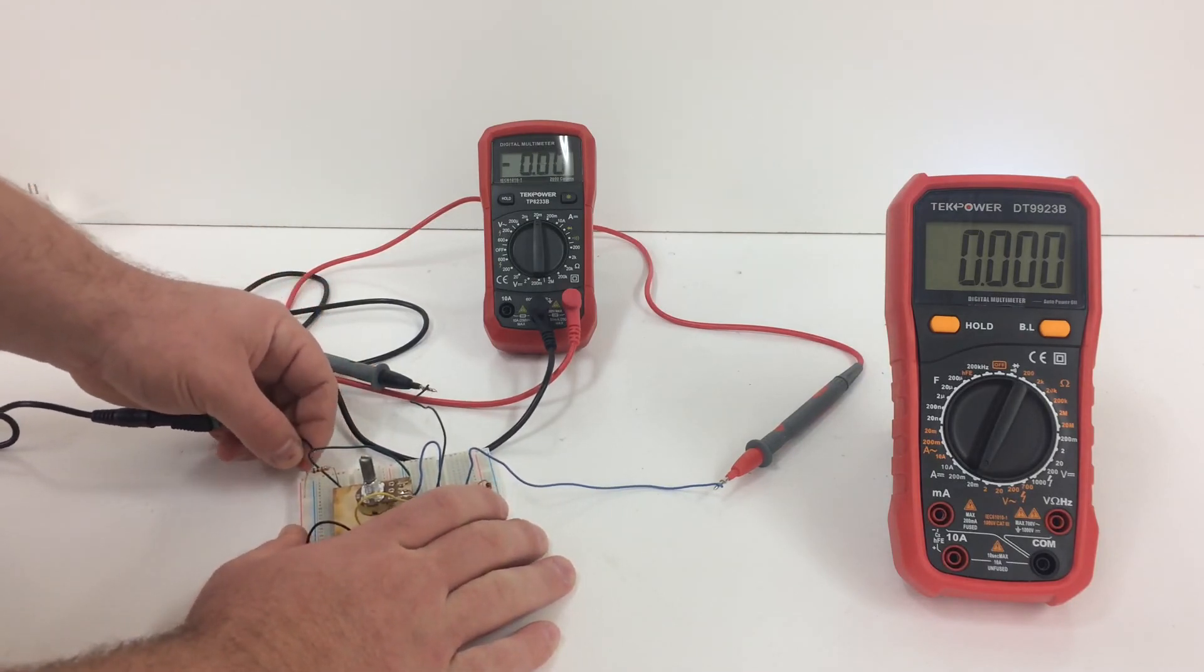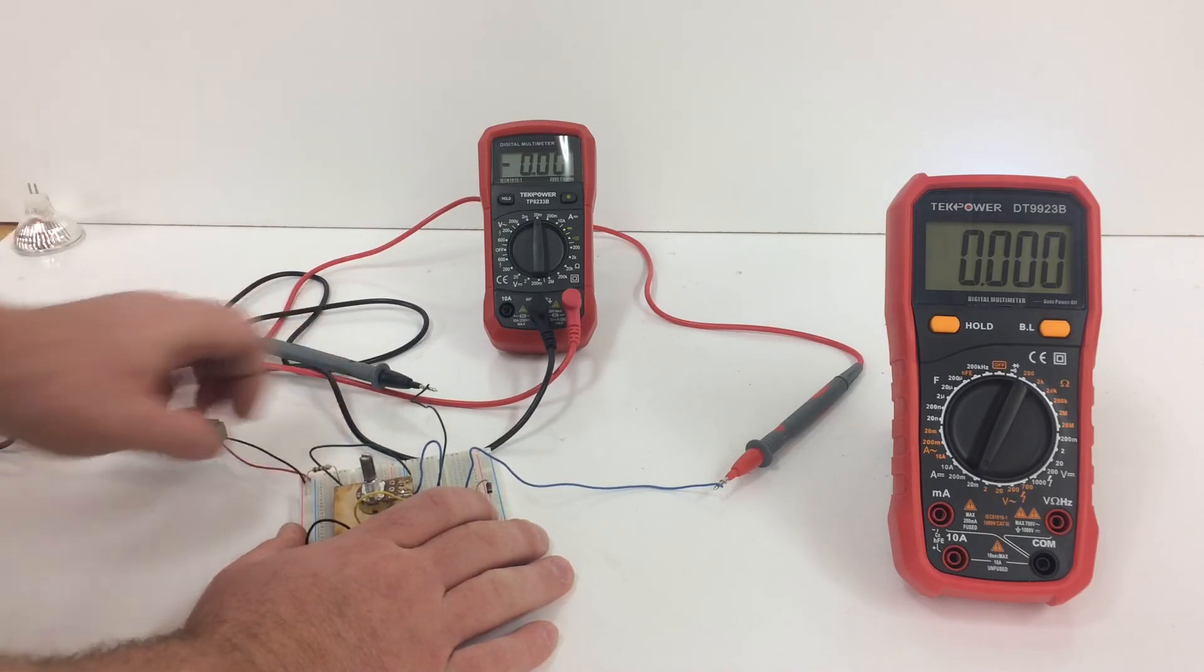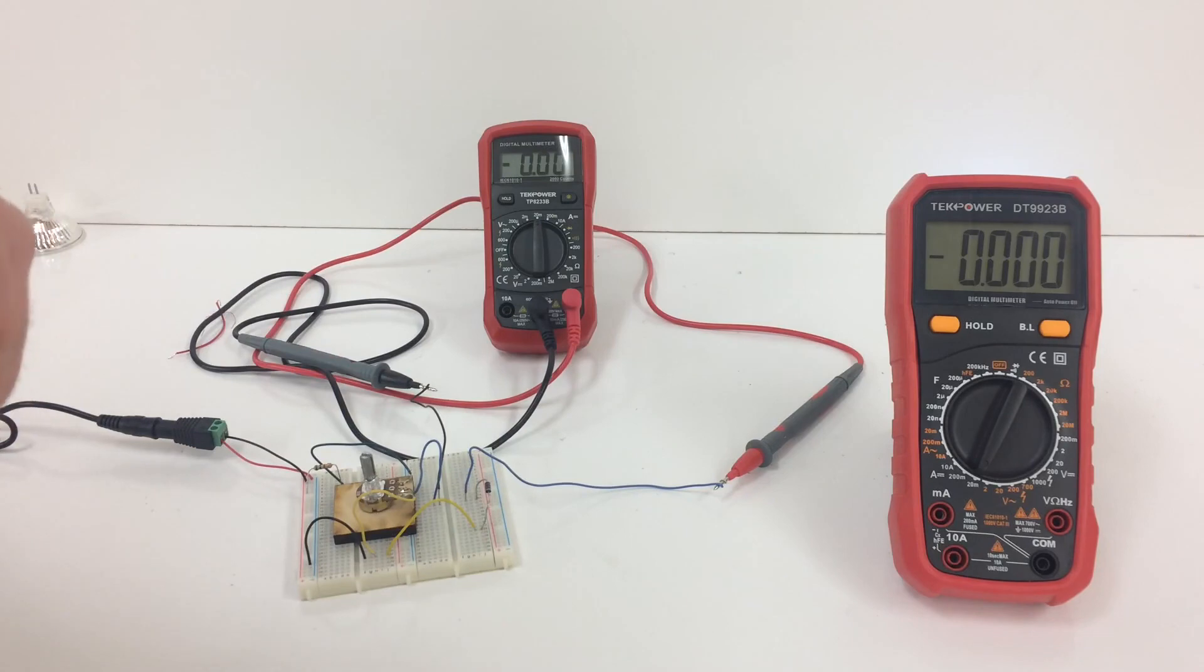To do part 2 we will simply keep the same setup but we are now going to flip where we plugged in our voltage supply and now do the reverse bias.